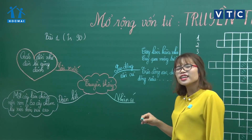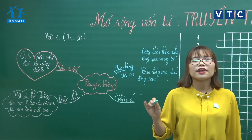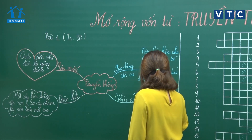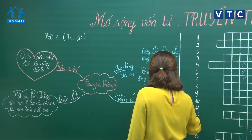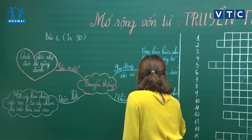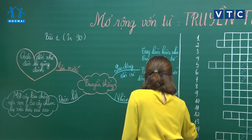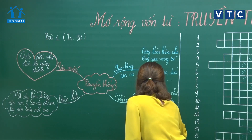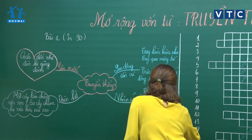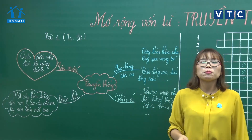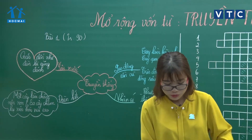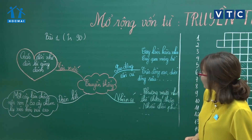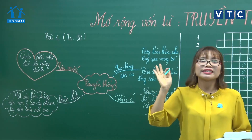Đến chủ đề nhân ái thì có rất rất nhiều nội dung. Nhân ái tức là tình yêu thương con người. Câu rất quen thuộc: 'Thương người như thể thương thân.' Hoặc: 'Nhiễu điều phủ lấy giá gương, người trong một nước thì thương nhau cùng.' Còn câu 'Lá lành đùm lá rách.' Với lao động cần cù còn có: 'Có công mài sắt có ngày nên kim', hoặc 'năng nhặt chặt bị.'